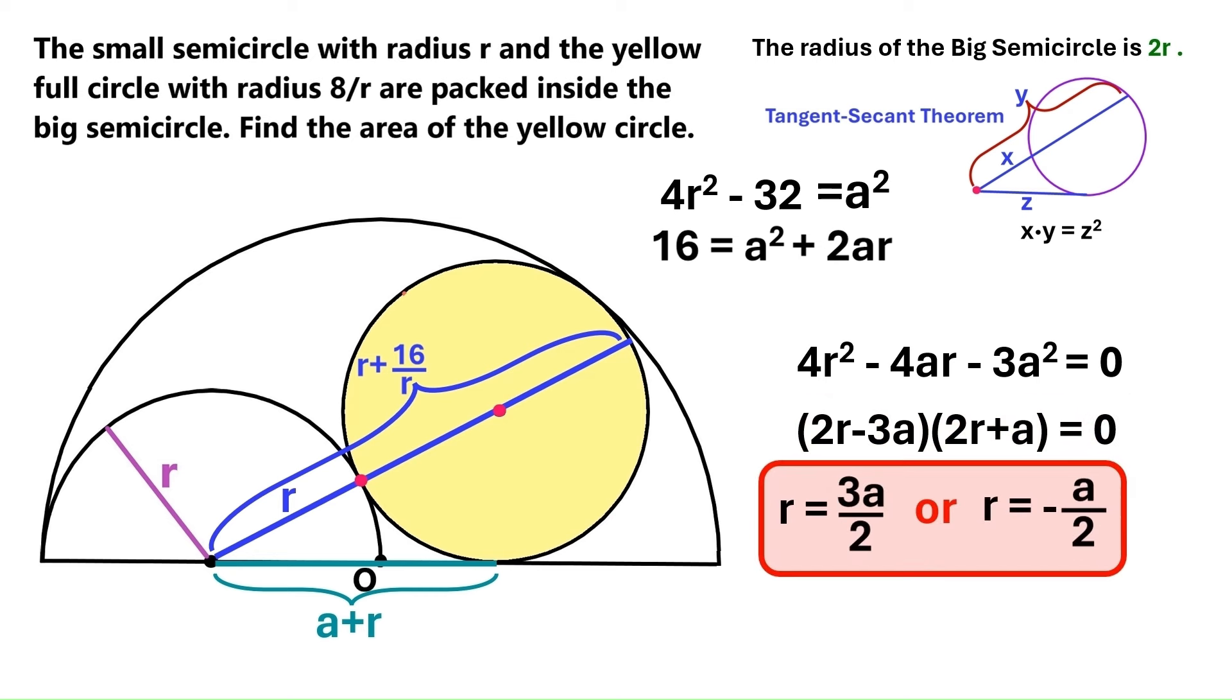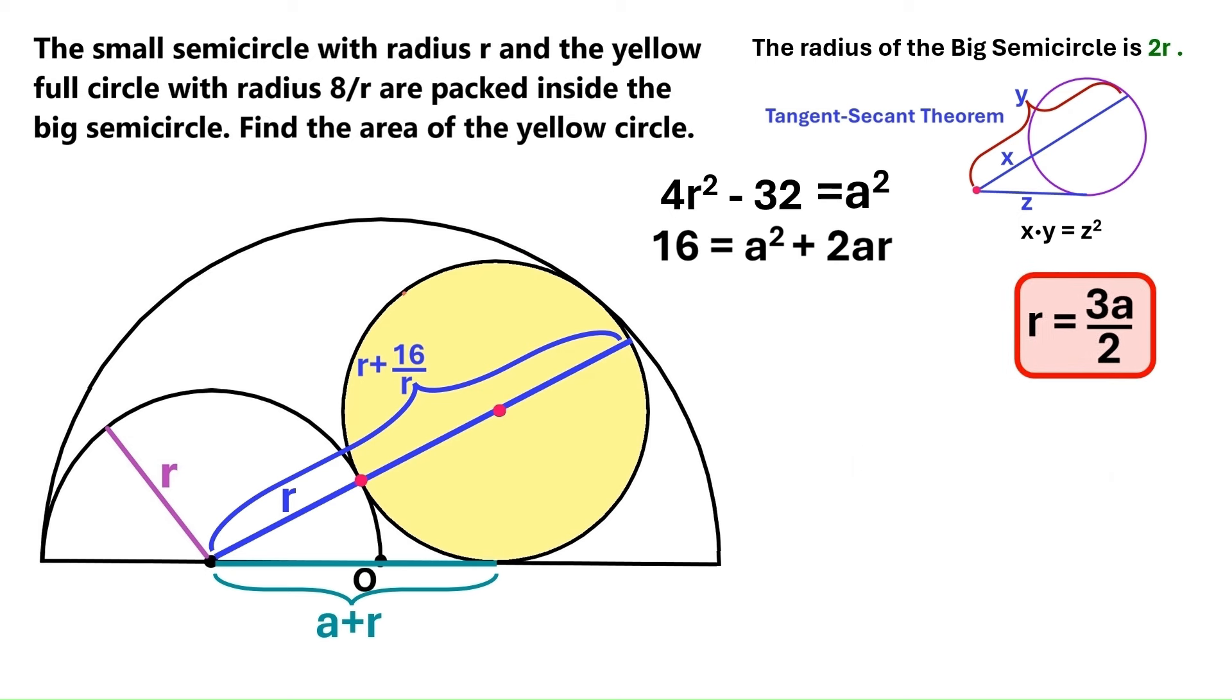It turns out, r is either 3a over 2, or minus a over 2. This one implies there is a minus distance somewhere, which is nonsense. So we end up with r equals 3a over 2. Let's move this super important finding up here.